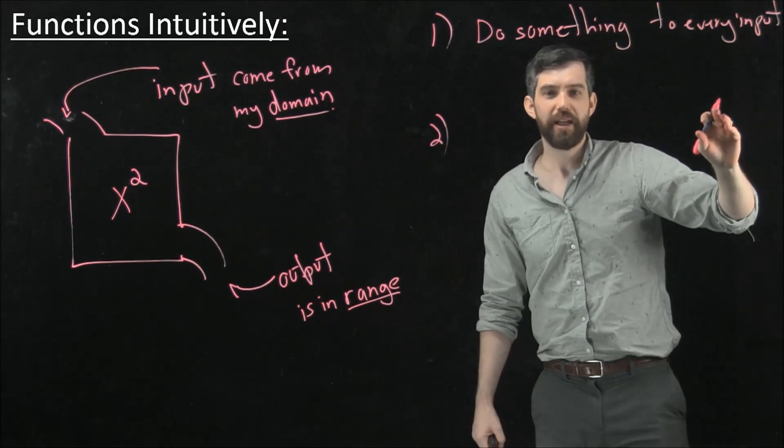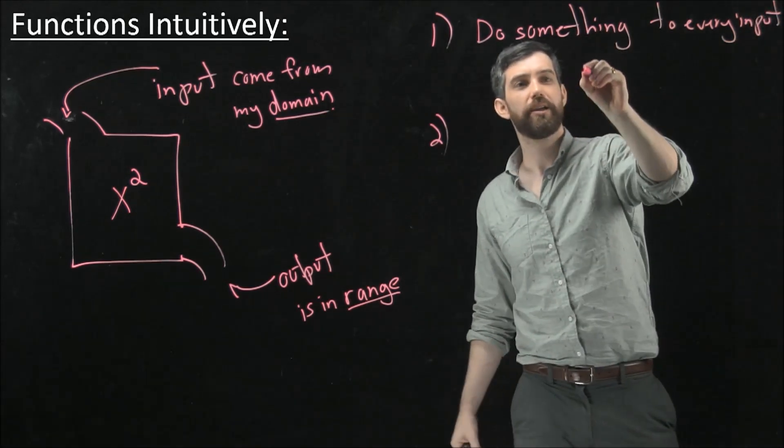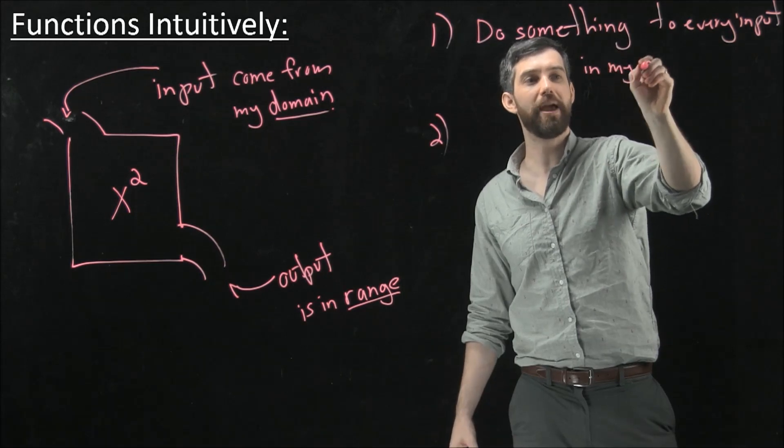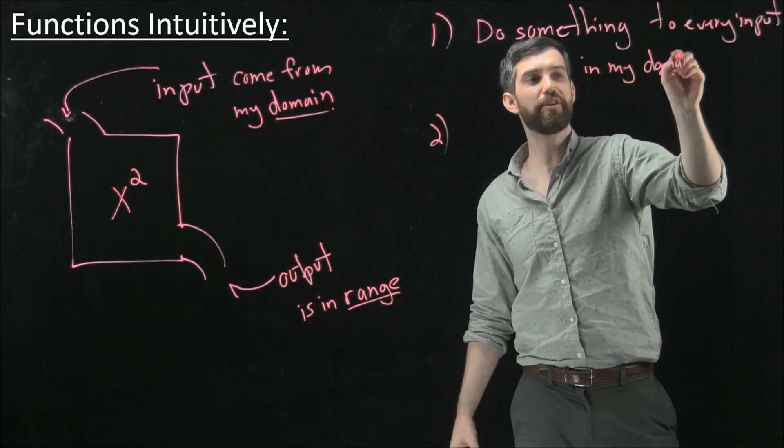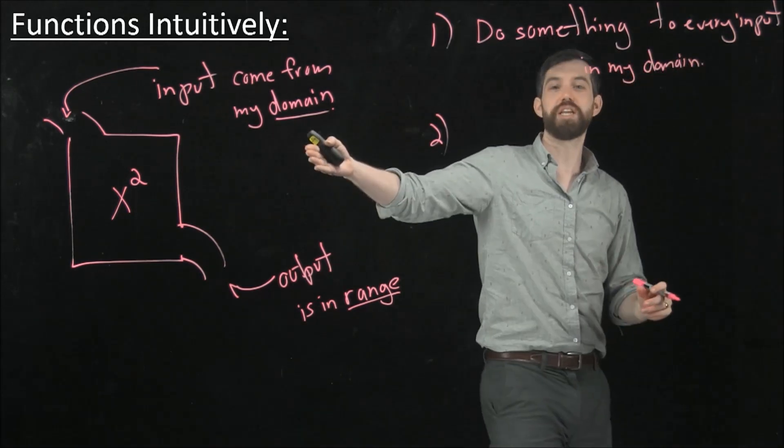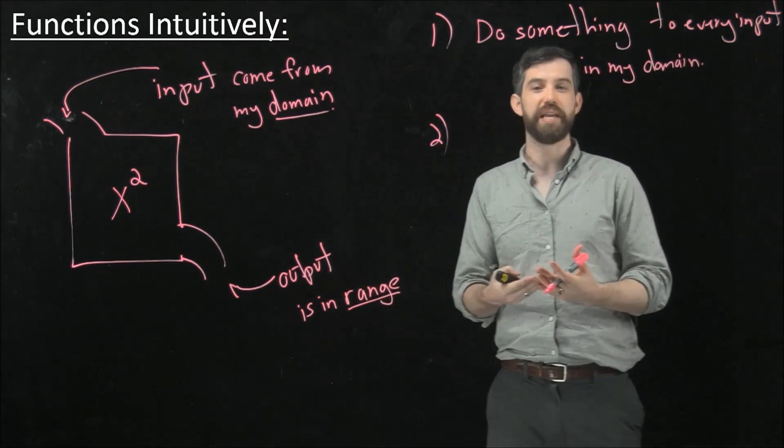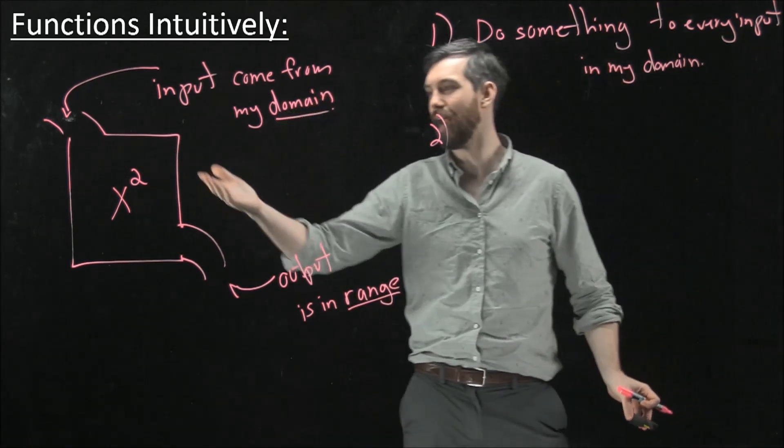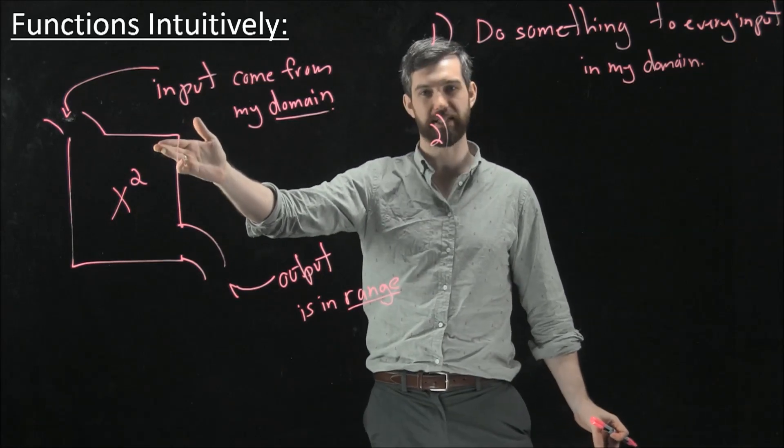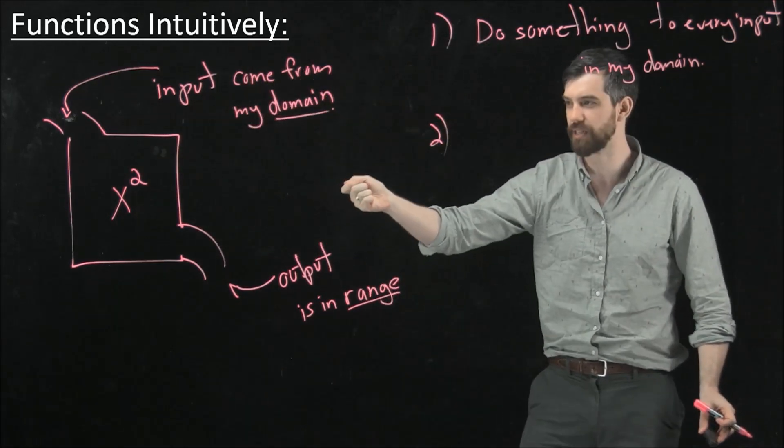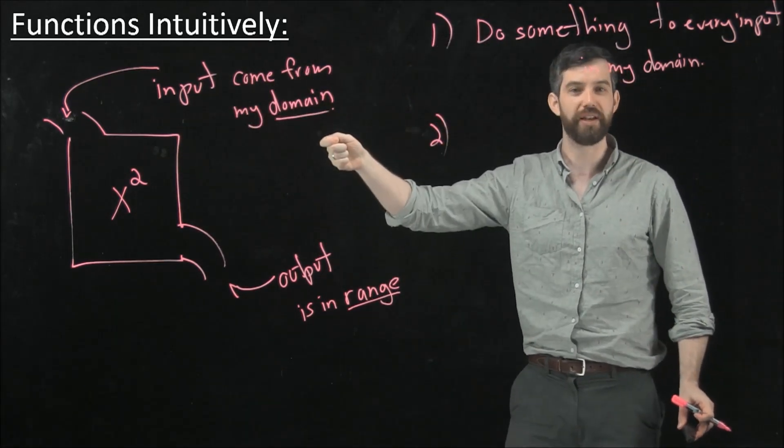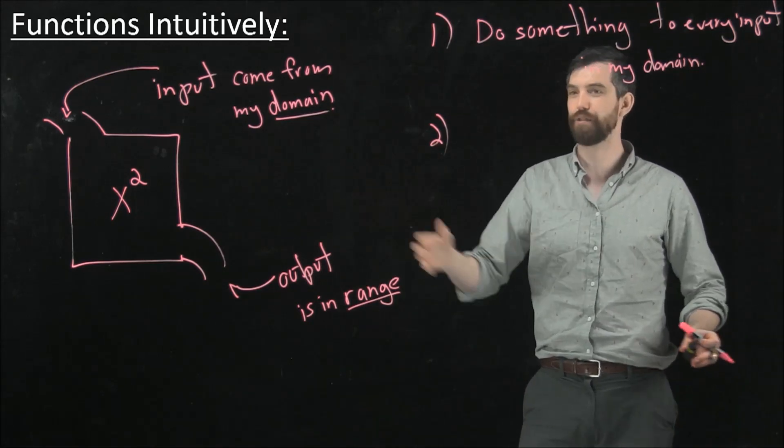I want it to do something to every input, or at least every input in my domain. For example, this is a machine whose domain is going to be numbers. I'm not claiming it squares an apple or squares a dog or anything like this. If my set is numbers, then it's going to do something to every number. So that's the first property.